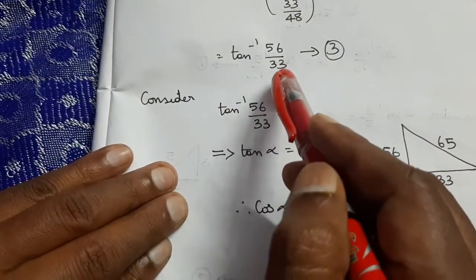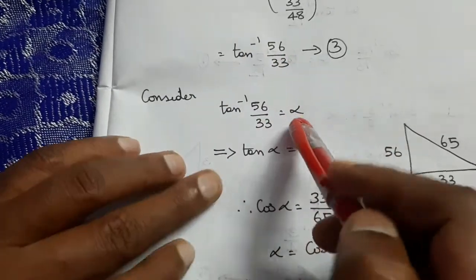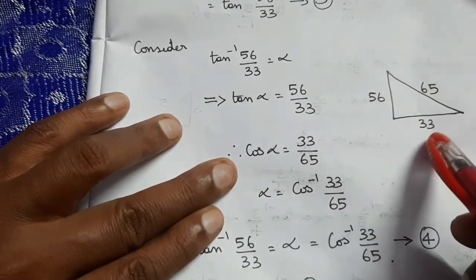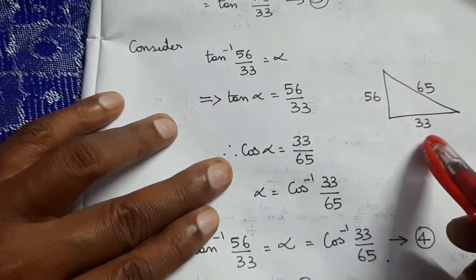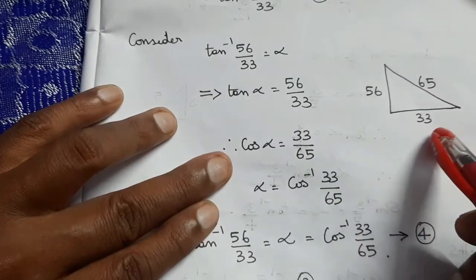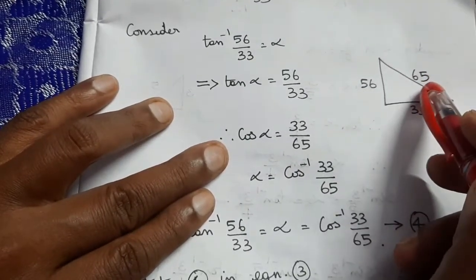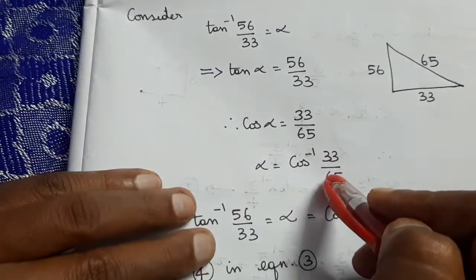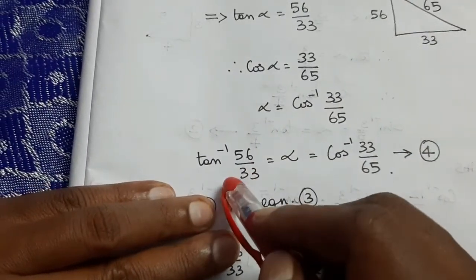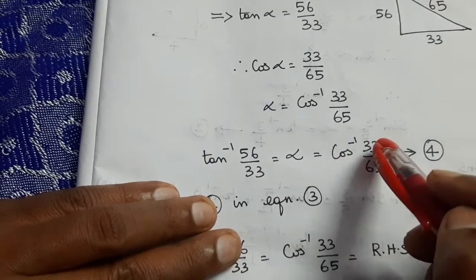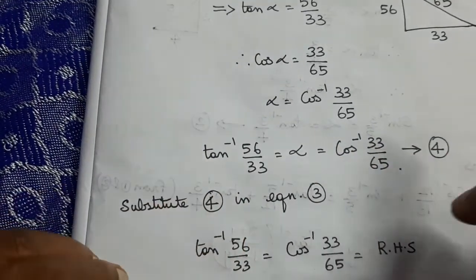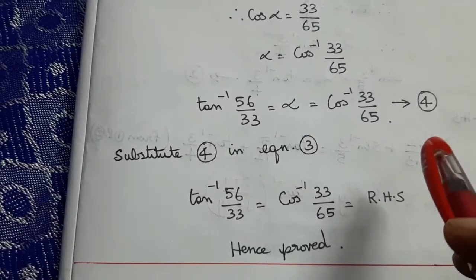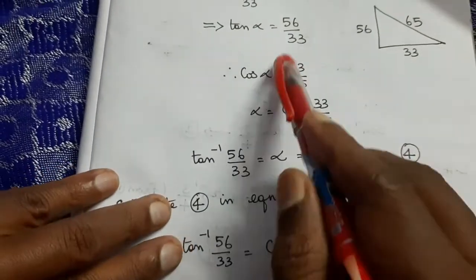Now let α = tan⁻¹(56/33), so tan α = 56/33. In a right-hand triangle, opposite = 56, adjacent = 33. Hypotenuse = √(56² + 33²) = 65. So cos α = 33/65, giving α = cos⁻¹(33/65). Therefore tan⁻¹(56/33) = cos⁻¹(33/65) = RHS. Hence proved.